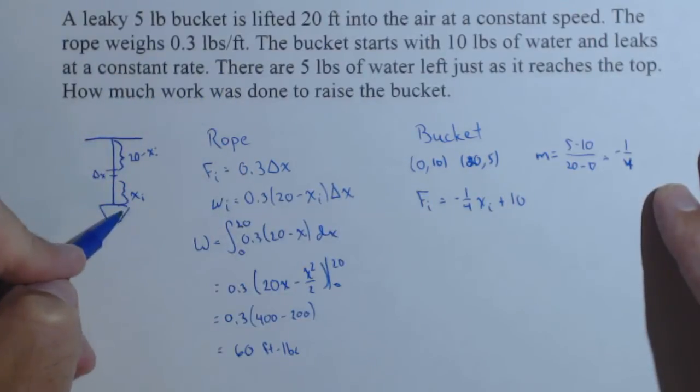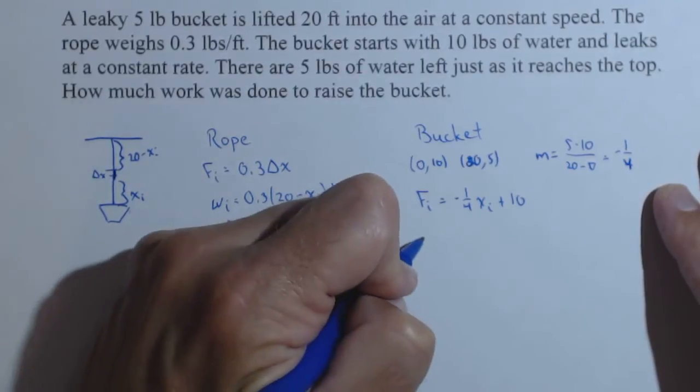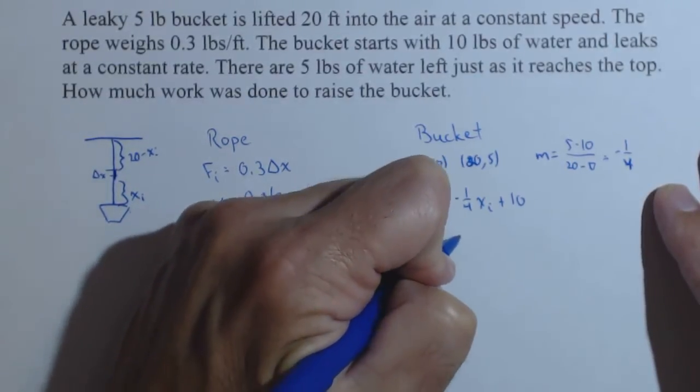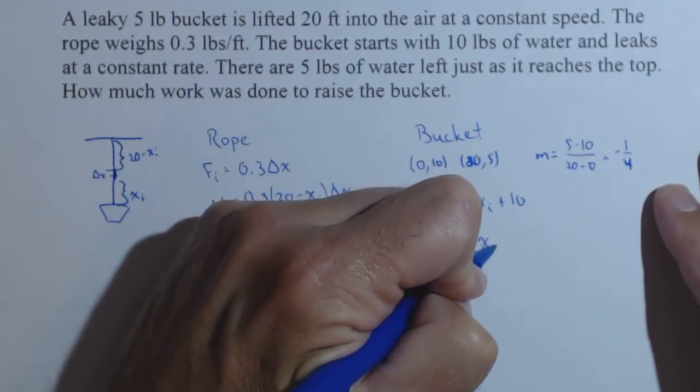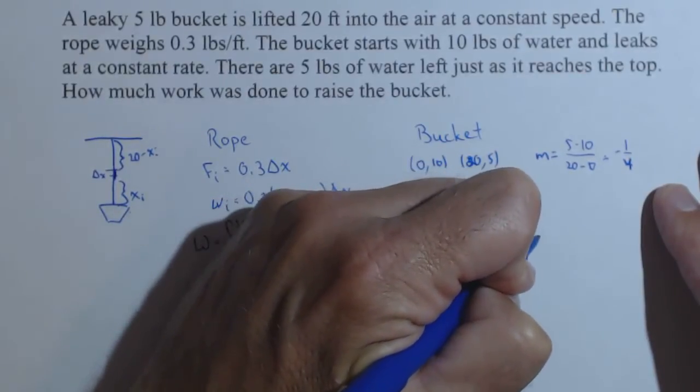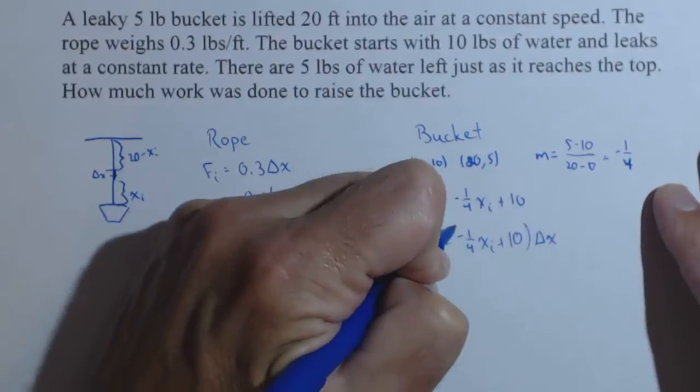Now, this bucket, we want to figure out how much it takes to raise it delta x. So the work on the ith slice is negative 1 fourth x sub i plus 10 delta x.